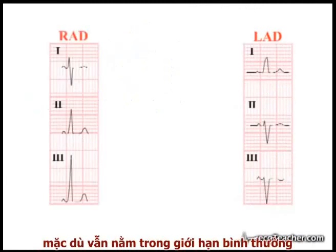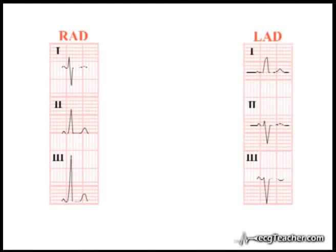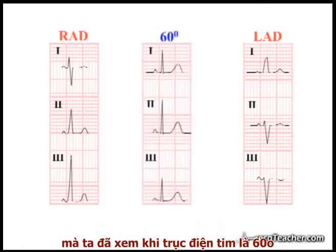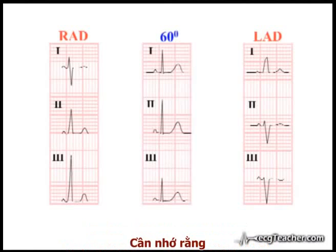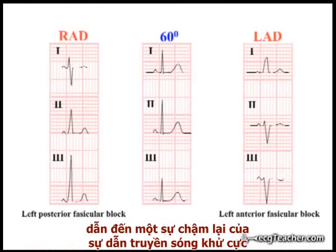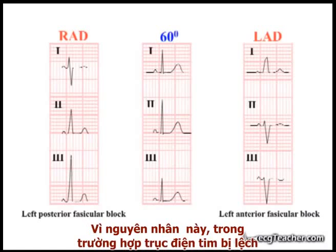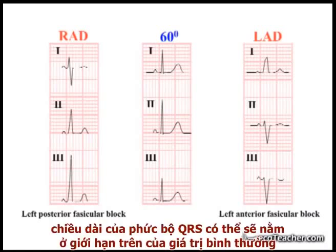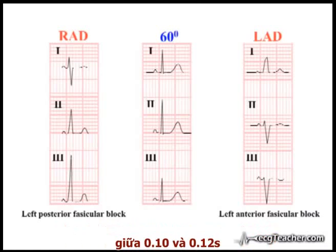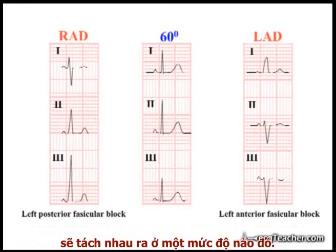You may have noticed that, although still within the normal range, the QRS complexes in both LAD and RAD are somewhat widened compared to our starting readouts with the axis at 60 degrees. Keep in mind that damage to the distal branches of the left bundle branch — the commonest cause of axis deviation — results in a slight delay in depolarization of the affected region of myocardium. For this reason, in axis deviation, the QRS duration tends to be in the upper limit of the normal range, between 0.1 and 0.12 seconds, and positive and negative components of the QRS complex in the individual leads separate to some degree.